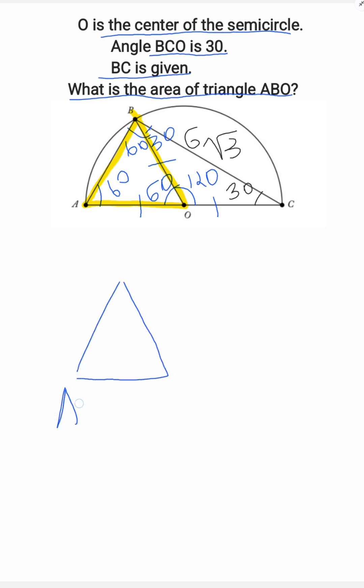Now let's look at angle ABC. 60 plus 30 is 90. That means it's a right angle.